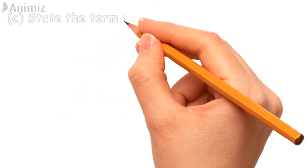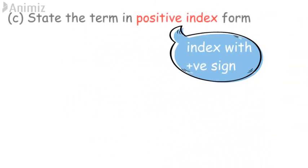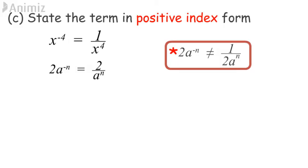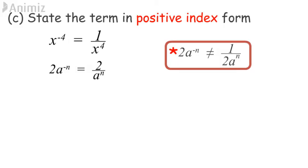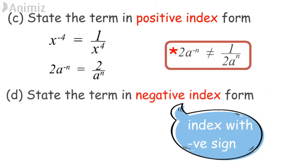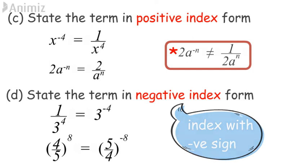Example C: state the term in positive index form. x^(−4) = 1/x^4. Also, 2a^(−n) = 2/a^n — bear in mind this is not equal to 1/(2a)^n. Example D: state the term in negative index form. 1/3^4 = 3^(−4). Also, (4/5)^8 = (5/4)^(−8).